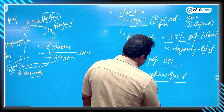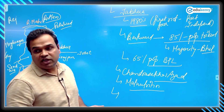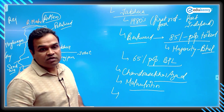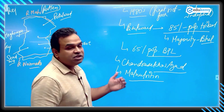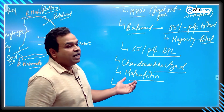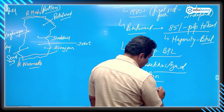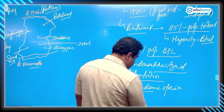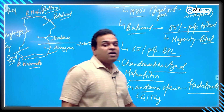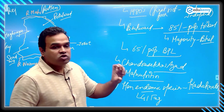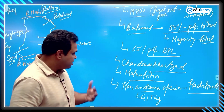One very famous event from Jhabua is Kadaknath - a hen species that has gained international recognition. It is an endemic species of Jhabua and has received a GI tag. The name is Kadaknath - it is black in color and its eggs are also slightly black. It has high protein content, high iron content, and medicinal properties.